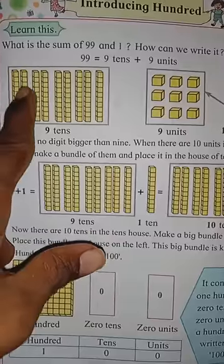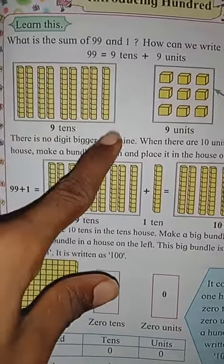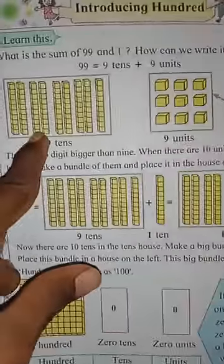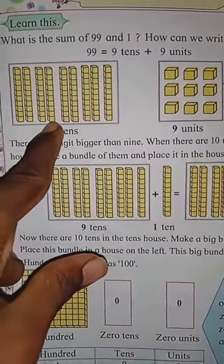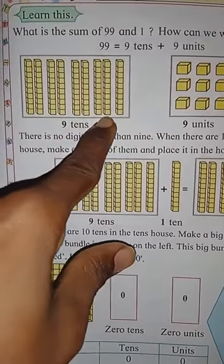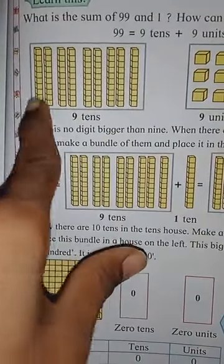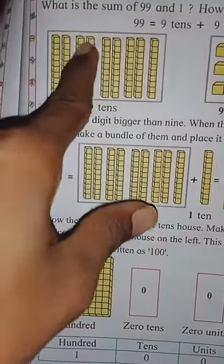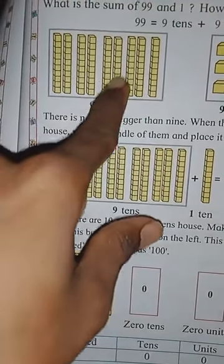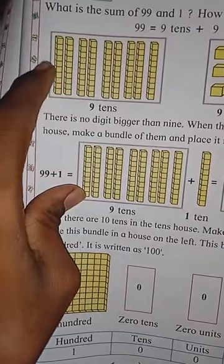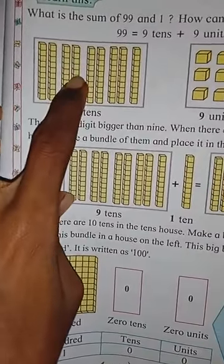Here you can see the blocks — how many blocks can you see? Let's count: one, two, three, four, five, six, seven, eight, nine. How many blocks are there? Nine blocks. Wait — let me recount: one, two, three, four, five, six, seven, eight, nine — ten blocks are there, okay?